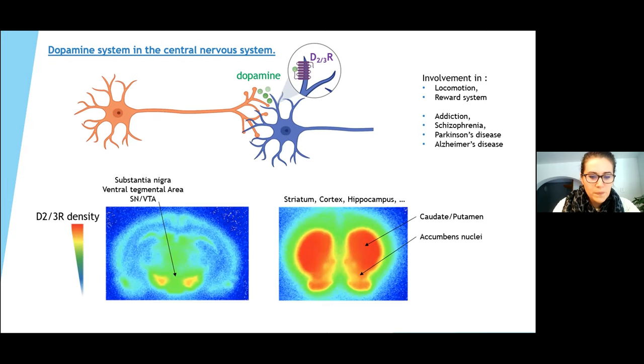The striatum can be divided in two parts: the dorsal striatum containing the caudate putamen and the ventral striatum containing the nucleus accumbens. The dorsal and ventral striatum and the substantia nigra play complementary but different roles in the functional expression of the dopaminergic system.